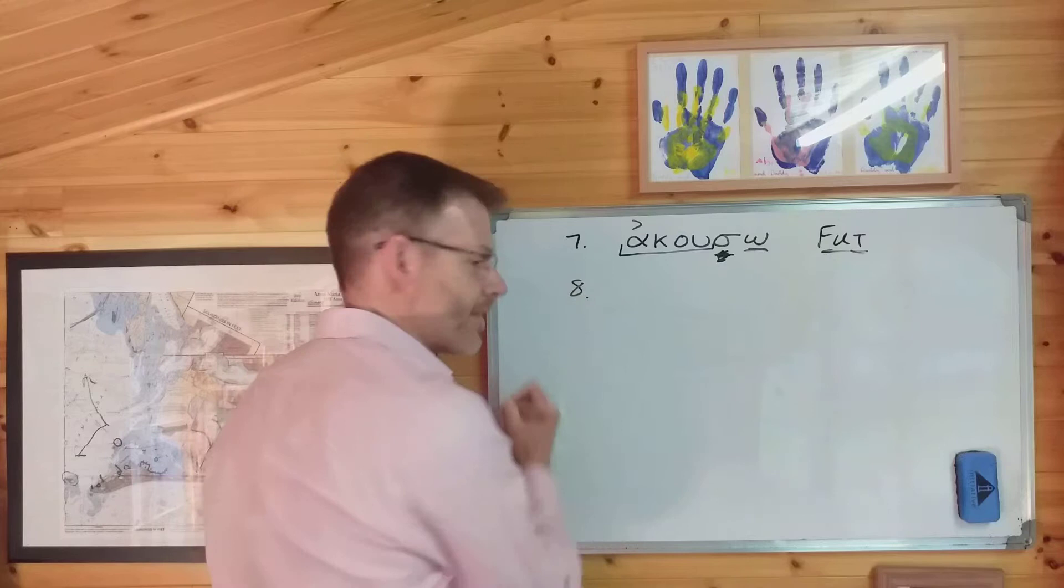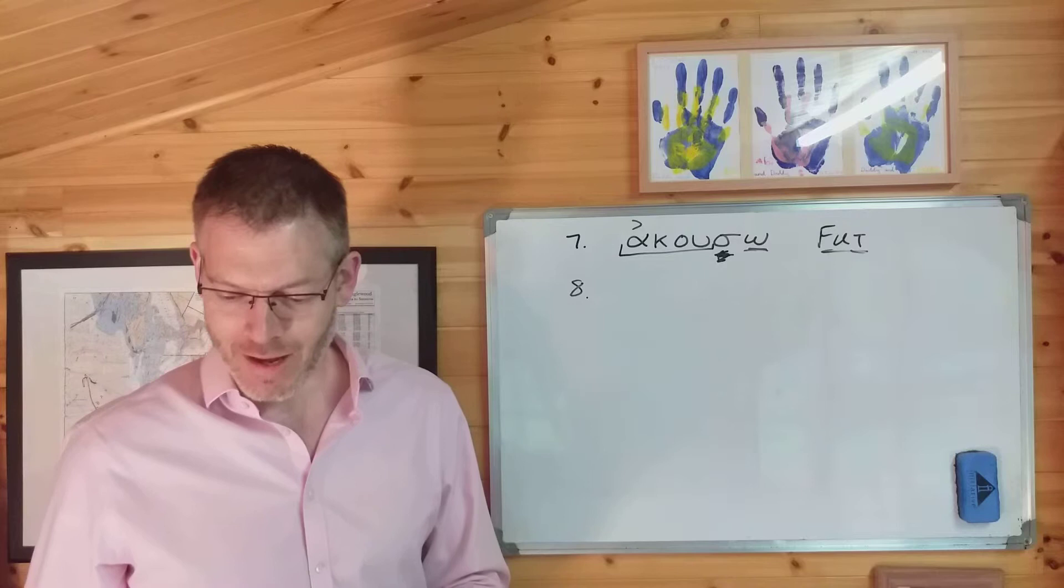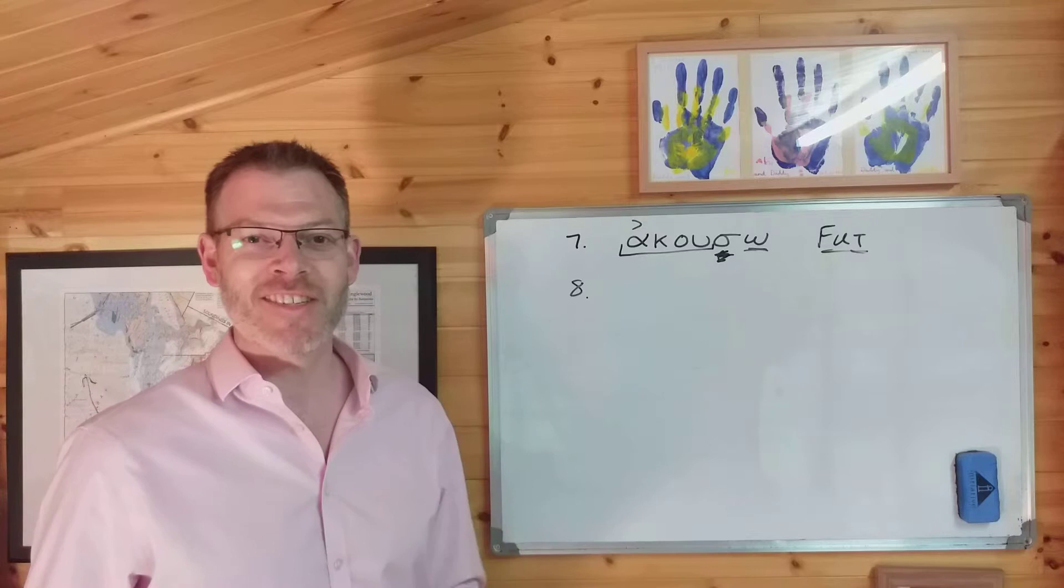Let's have a look at number eight. Number eight, lambano. I'm not bothered to write that one out. That's easy. We recognize the verb, right? Lambano. That means I take or I receive. Is there an epsilon augment? Is there a sigma suffix? No, there isn't. So that's in the present tense.